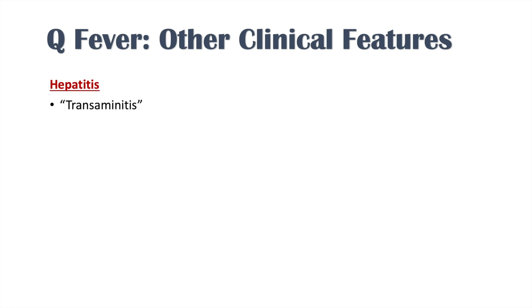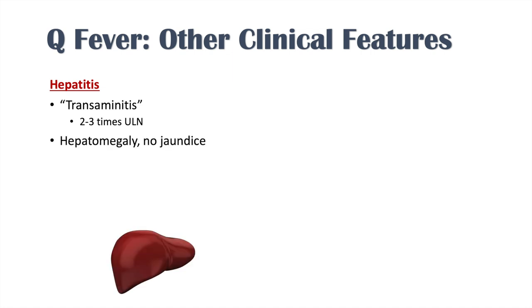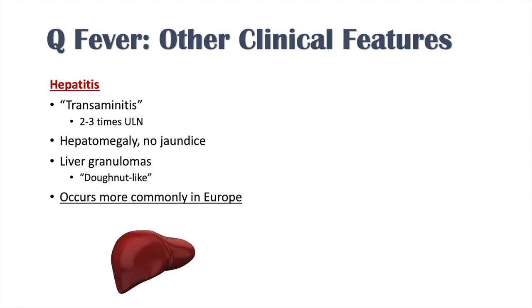Other clinical features include hepatitis. We can see transaminitis — elevations of liver enzymes that are generally low-grade, usually 2 to 3 times the upper limit of normal. Hepatomegaly or an enlarged liver can occur, but jaundice does not typically occur. Liver granulomas can also occur, and if biopsied they have a donut-like description. The clinical presentation of hepatitis occurs more commonly in Europe.